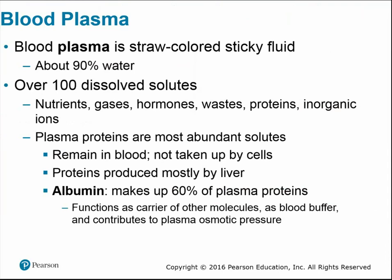Plasma is the fluid component of blood — a straw-colored, sticky fluid that is about 90% water, containing all dissolved solutes such as nutrients, gases, hormones, waste, proteins, and ions. The plasma proteins are the most abundant solutes and generally remain in the blood rather than being taken up by cells; their job is to stay in the blood, assist with blood clotting, and they are produced mostly by the liver.